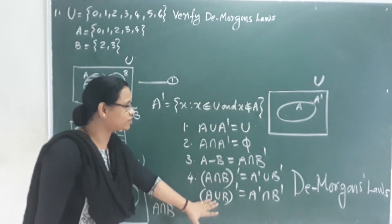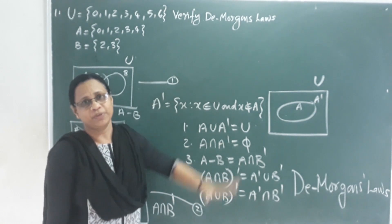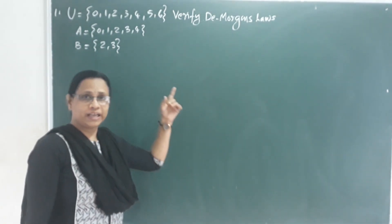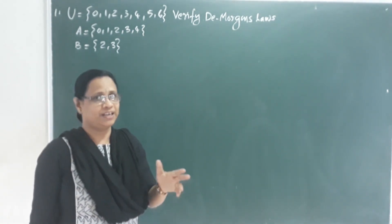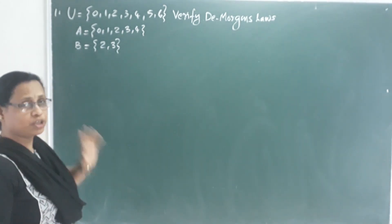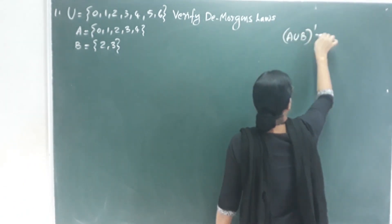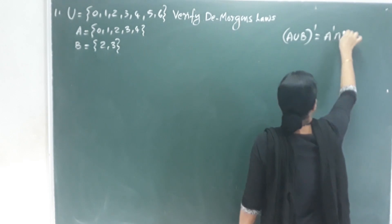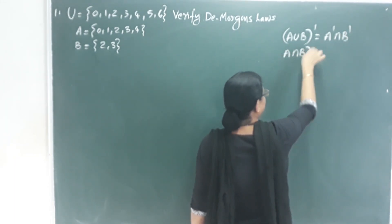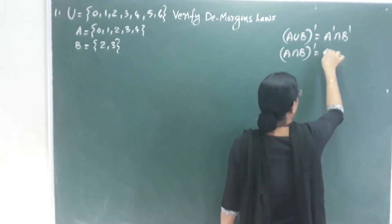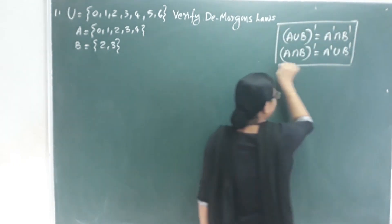We can prove both De Morgan's laws. We have two laws: first, (A union B)' equals A' intersection B'; and second, (A intersection B)' equals A' union B'. Let's now prove these.